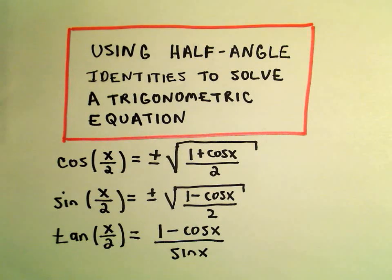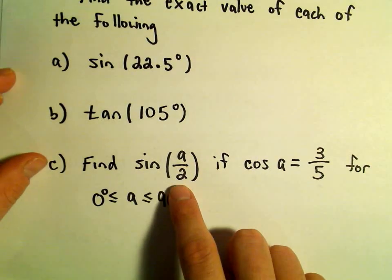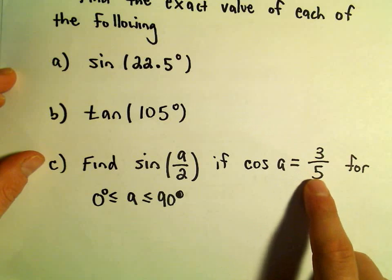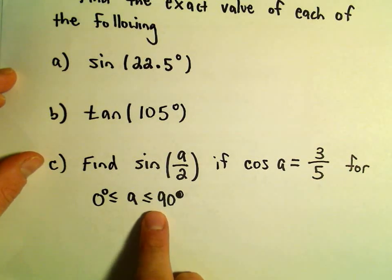Okay, so one more example here of using our half-angle identities. Here we're simply going to evaluate sine of the angle a over 2. We're given that cosine of a is 3 over 5, and we're also told that angle a is between 0 and 90 degrees.